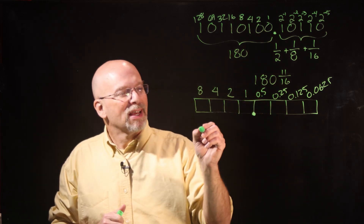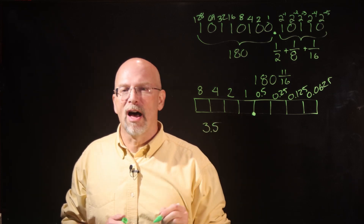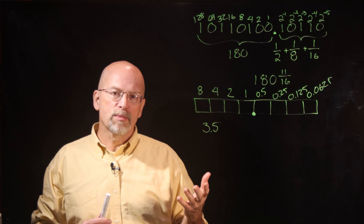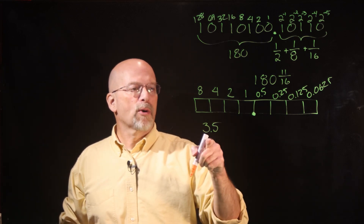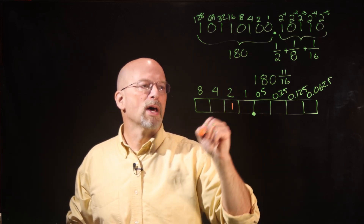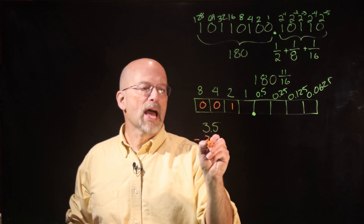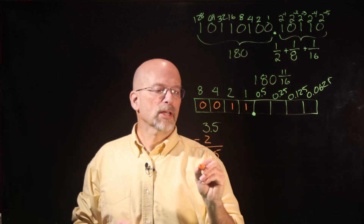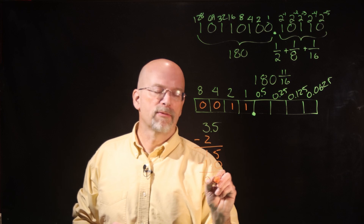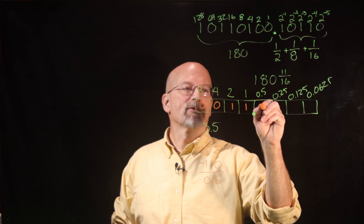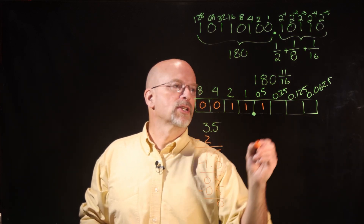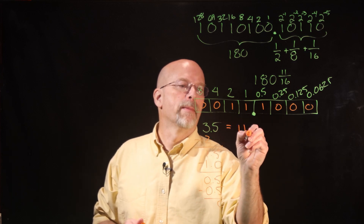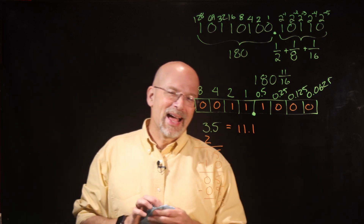Let's do a conversion — something simple like 3.5. The largest power of two in 3.5 is two, so we put a one in that position; there are zero eights and zero fours. We pull out a two, leaving 1.5. Next, the largest power of two is one, so we pull out a one, leaving 0.5. The next power of two is 0.5, so we put a one there, pulling out 0.5, leaving zero. So 3.5 in binary is 11.1.